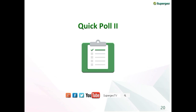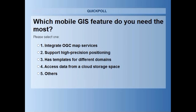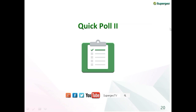Thank you Olivia for the first half introduction of SuperPAD and NTRIP settings. After a short break with another quick poll — which mobile GIS feature do you need? — welcome back. The poll result shows that 44% of our audience today said the most important mobile GIS feature is support for high-precision positioning, and the second is integrating OGC map service. Don't worry, SuperPAD supports both.